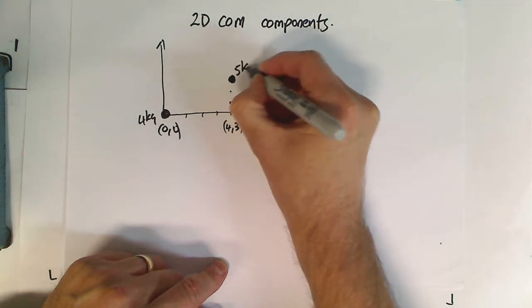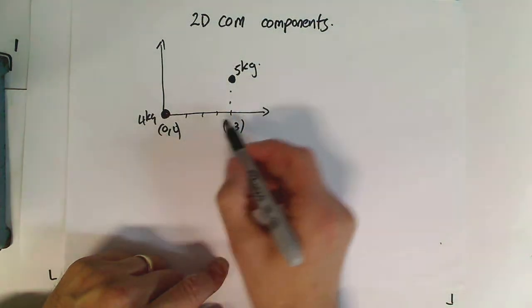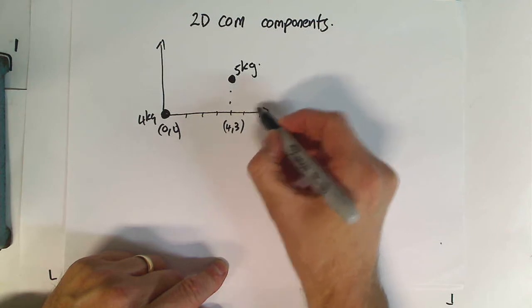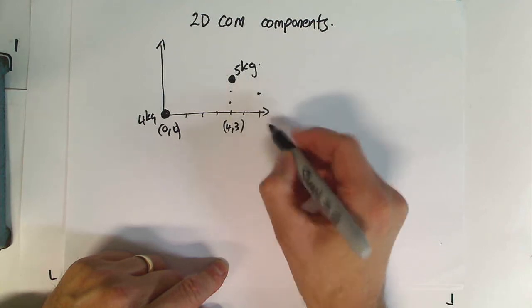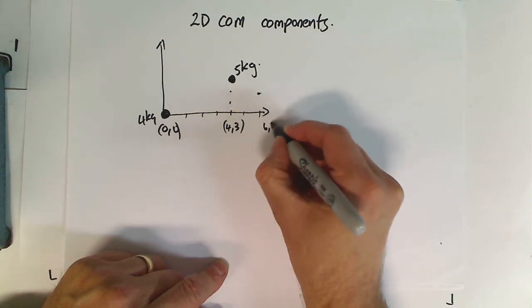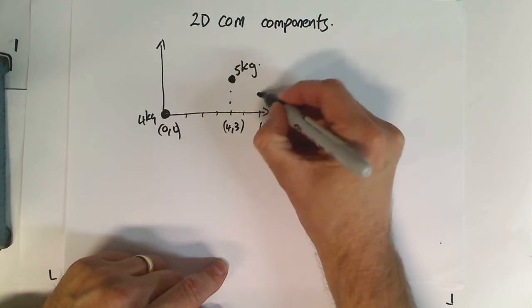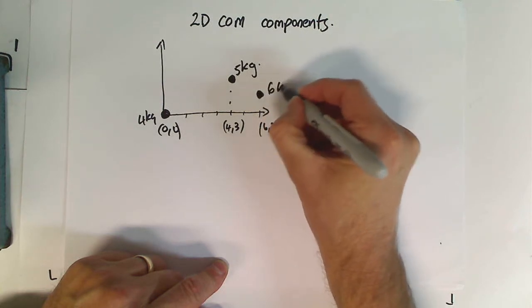And I'll just write down its 5kgs. And we'll go 5, 6. And at 6, 2, we'll put a 6kg object.